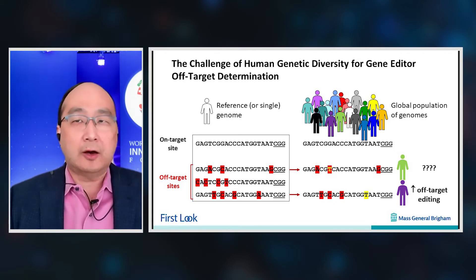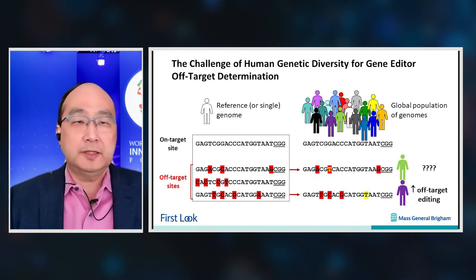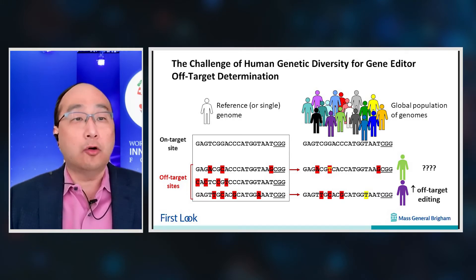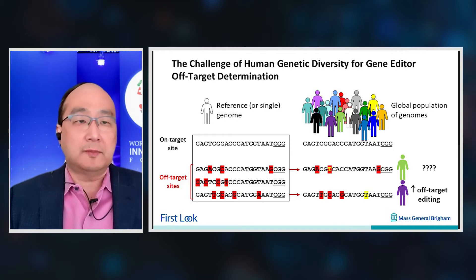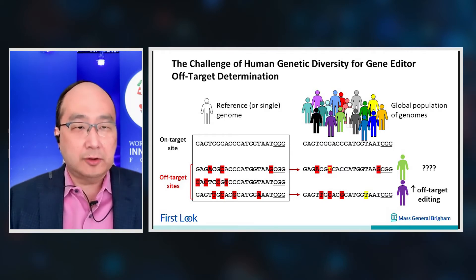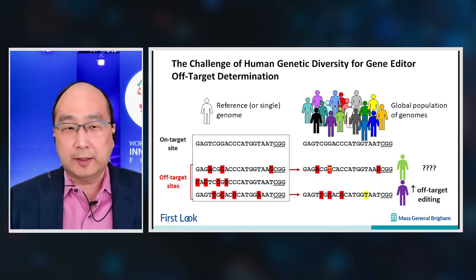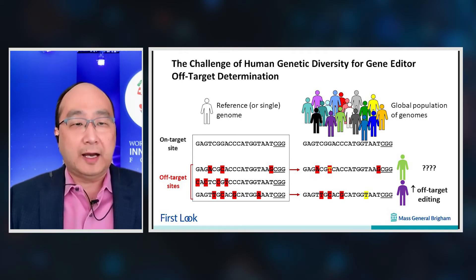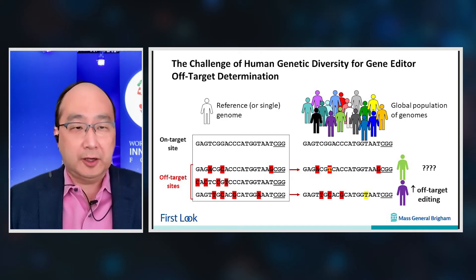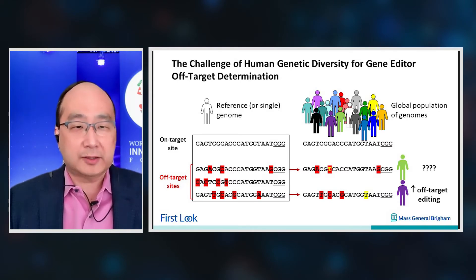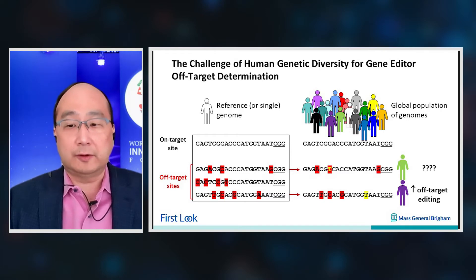All of the assays described to date are really designed to be done on a single genome at a time, typically on a reference genome or a particular cell line. You know the on-target site, and the assays tell you what the off-target sites are. I've highlighted in the off-target sites those base positions that are mismatched or different from the on-target site — for example, three mismatches in one, four mismatches in the next.